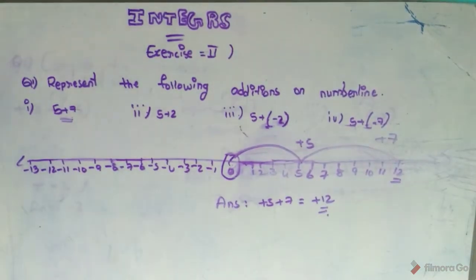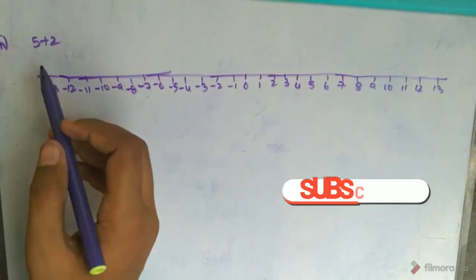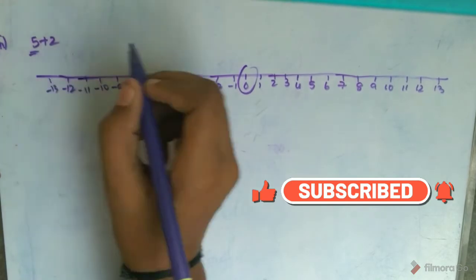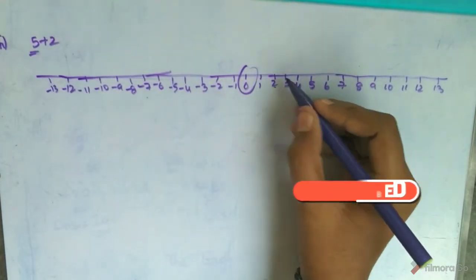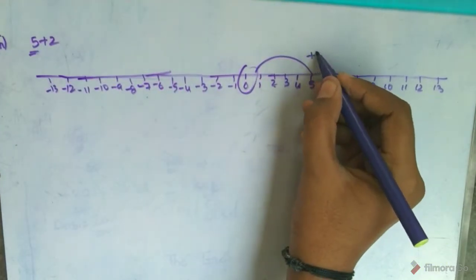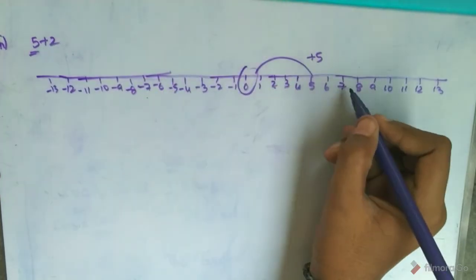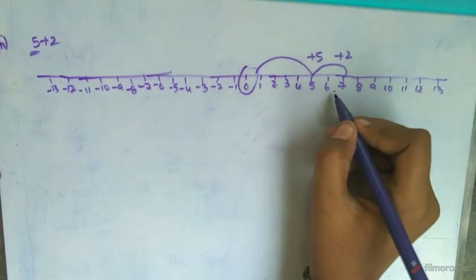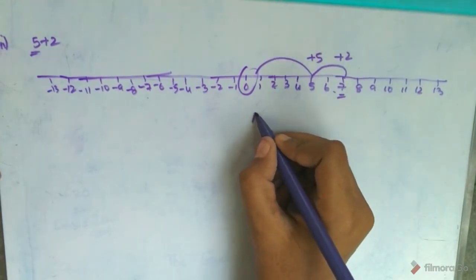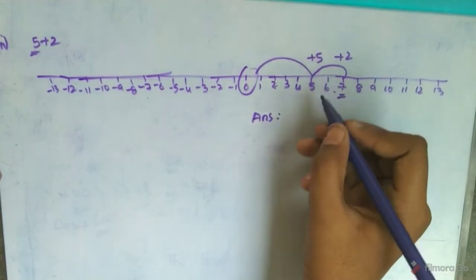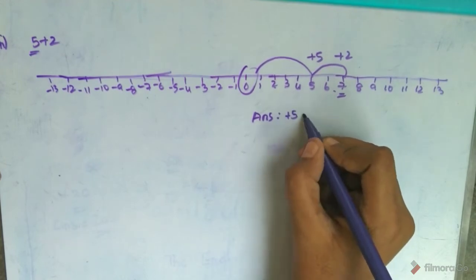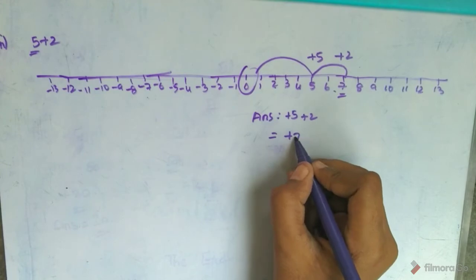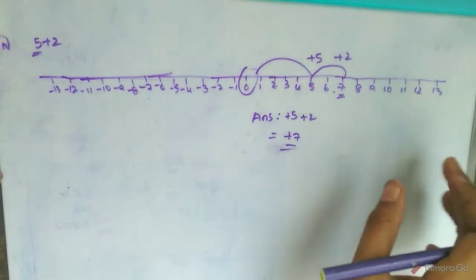Let's go to the second question. Roman ii is plus 5 plus 2. Start from 0, move plus 5, then plus 2. So the answer is: plus 5 plus 2 is equal to plus 7. This is the answer for the second row.